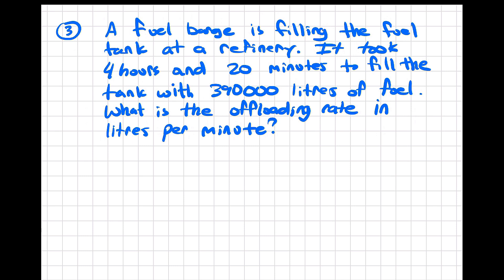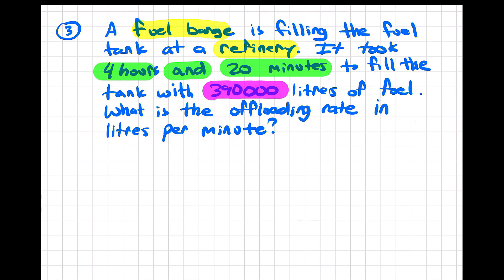We have a fuel barge filling a fuel tank at a refinery. It took four hours and 20 minutes. You have to be careful with time because we have two different units — hours and minutes. You know every hour has 60 minutes, so you can easily convert to minutes. In that time, they filled the tank with 390,000 liters. We need to find the rate in liters per minute.